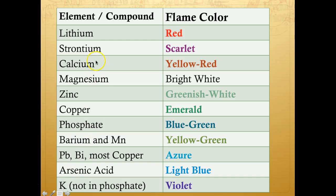Some of the elements and compounds you'll be testing include lithium, strontium, and calcium. When you have different shades of red, it can be hard to distinguish between them — this is especially difficult in a physical lab. Magnesium produces a bright white color that may or may not be clearly visible. Different shades of green can also be hard to distinguish. Potassium, on the other hand, is very visible because of its characteristic lavender or violet color. Sodium has its characteristic orange-yellow color.